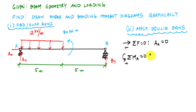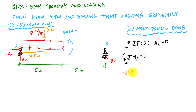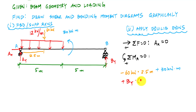Summing moments about A will help me get BY. Going left to right, I have a resultant associated with the distributed load right at the middle, and that's just the area of the rectangle: 60 kilonewtons. 12 times 5 is 60 kilonewtons, and it acts halfway, so this distance is 2.5 meters. So summing moments: negative 60 kilonewtons times 2.5 meters, plus 30 kilonewton-meters for the concentrated moment, plus BY times its arm of 10 meters, all set equal to 0.